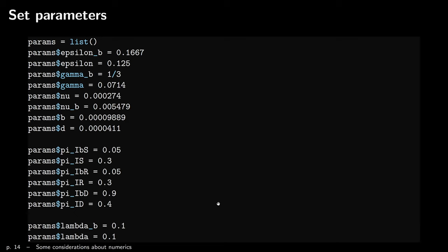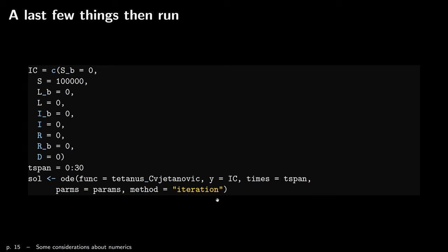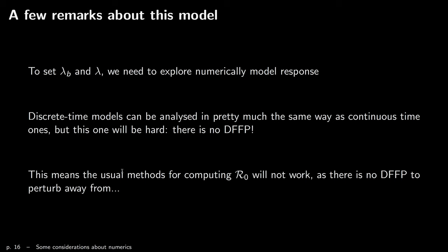Now you can set the parameters. I've given values here — all the code is available on the GitHub repo, so feel free to go there; it's called 'Sitanovich something'. Then I set the initial conditions, the time span, and call the function to get the solution. I'm not going to show you the solutions — you can play with the code and you will see this. A few remarks: to set lambda_b and lambda, you actually need to explore numerically the model response. I'll show you later how you can use knowledge of R0 to set some parameters that are difficult to set.